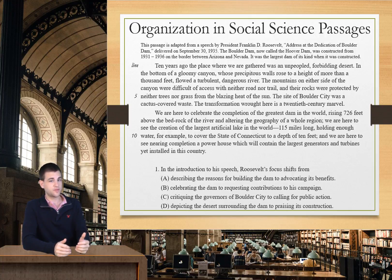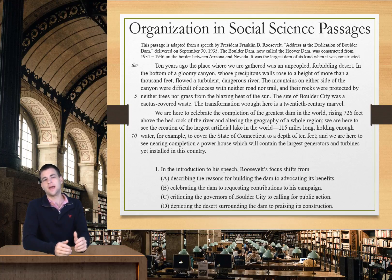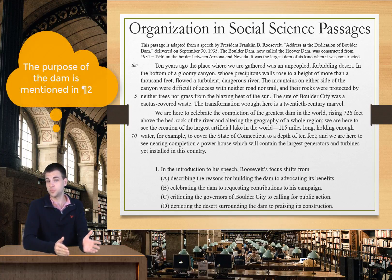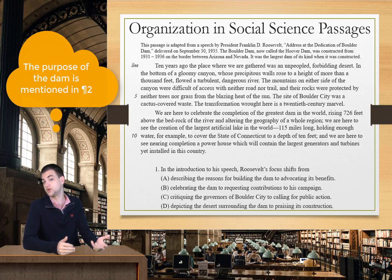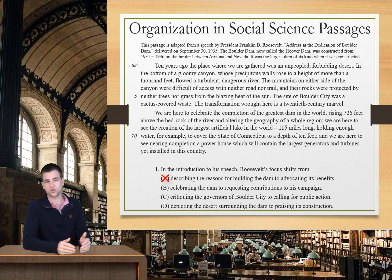A tells us that Roosevelt's focus shifts from describing the reasons for building the dam to advocating its benefits. And really, this is one of those answer choices where it could almost seem right, but it's just not quite good enough. The reason is the first paragraph really does not focus on the reasons for building the dam. Maybe we could infer that the harshness of the desert was a reason, but that's not explicit in the text itself. So we will eliminate A.